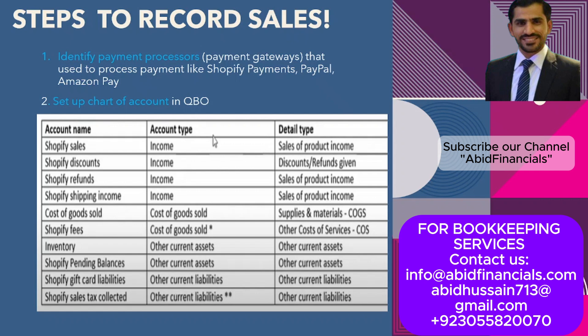The second step is to set up the chart of accounts in QuickBooks Online. There are three columns: account name, account type, and detail type. For example, Shopify Sales should be recorded under the Income category with the detail type 'Sales of Product Income.' Shopify Discounts would be under Income with sub-category 'Discount and Refund Given.' Similarly, record Shopify Refunds and Shopify Shipping Income under the Income account.